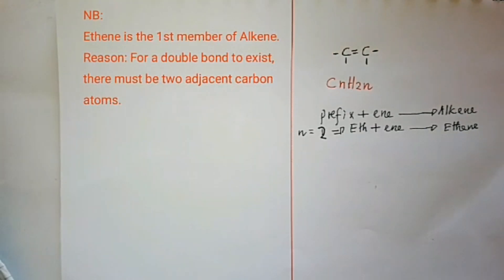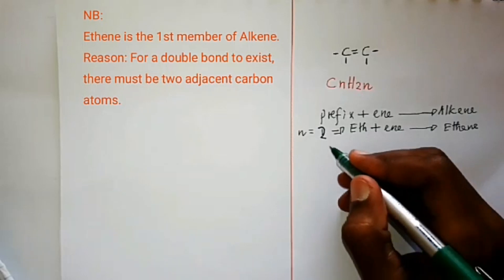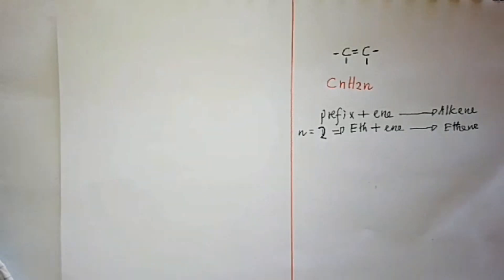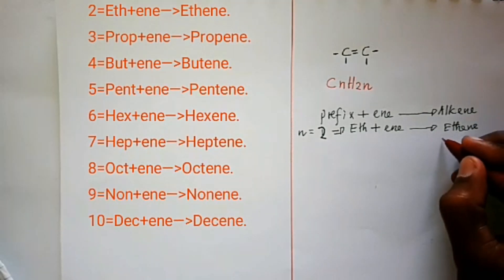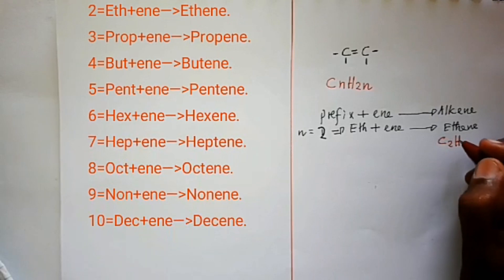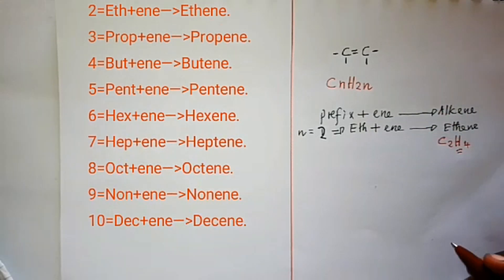The first member of an alkene is ethene, and not methene — there is no methene in alkenes. This is because for a double bond to exist there must be at least two adjacent carbon atoms. The molecular formula of ethene: n equals two, so C2H4.